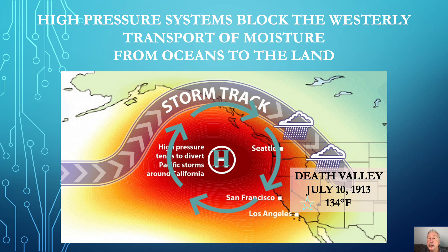Because this dryness amplifies temperatures, Death Valley in southeastern California still holds the record for the hottest observed air temperature, reaching 134 degrees Fahrenheit on July 10, 1913 — long before any significant rise in carbon dioxide.